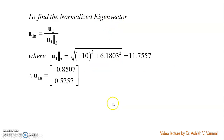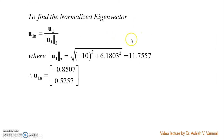We then normalize it by finding the L2 norm of vector u1: square root of ((-10)² + (6.1803)²), which equals 11.7557. Dividing each term by this value, we get the normalized vector U1N as (-0.8507, 0.5257).